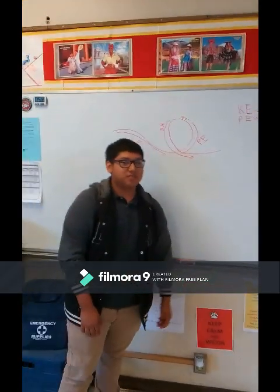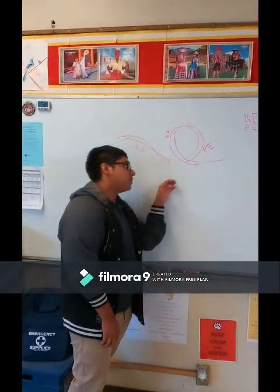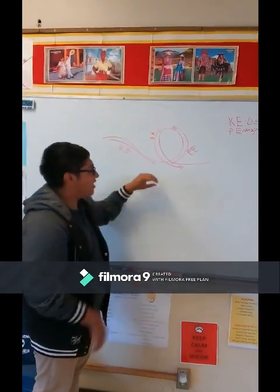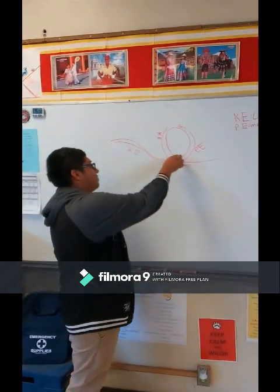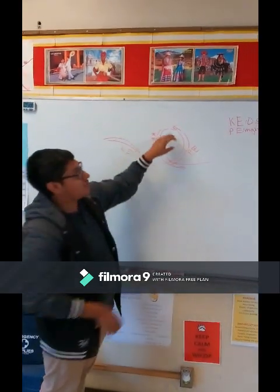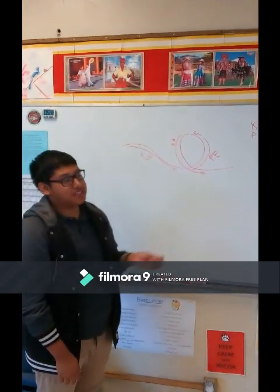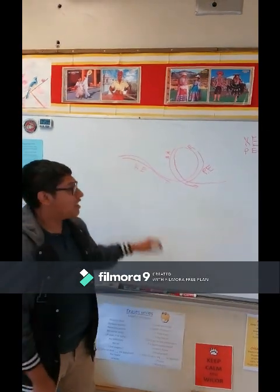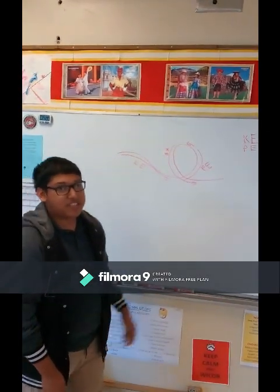Okay, so most roller coaster loops are teardrop-shaped, meaning that the radius is larger at the bottom than it is at the top. And that helps us out with our question because our question deals with kinetic energy and potential energy. Kinetic energy is energy through movement and potential energy is stored energy.